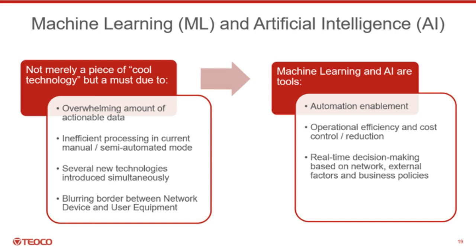ML and AI are the tools, not the end goals. They will enable automation, help control and reduce costs — which many in the industry see as one of the major drivers toward 5G — and drive complex real-time decision-making. One of the most interesting areas for ML and AI use will be combining network and customer data with business policies. The NFV/SDN-enabled 5G network with on-demand slicing will create a very dynamic and agile environment. But not everything that makes sense from a network perspective will necessarily make sense from a business perspective — we're always dealing with a finite amount of resources.